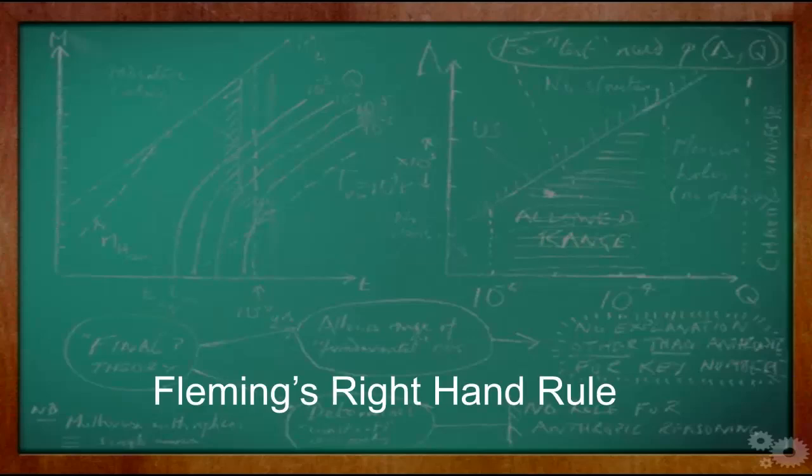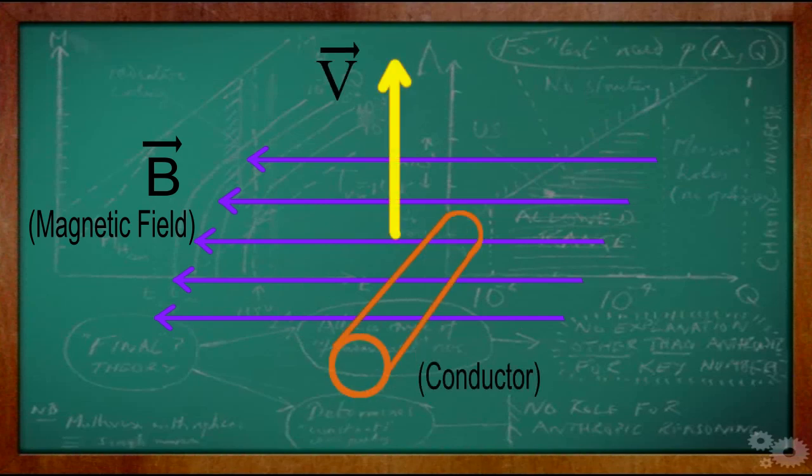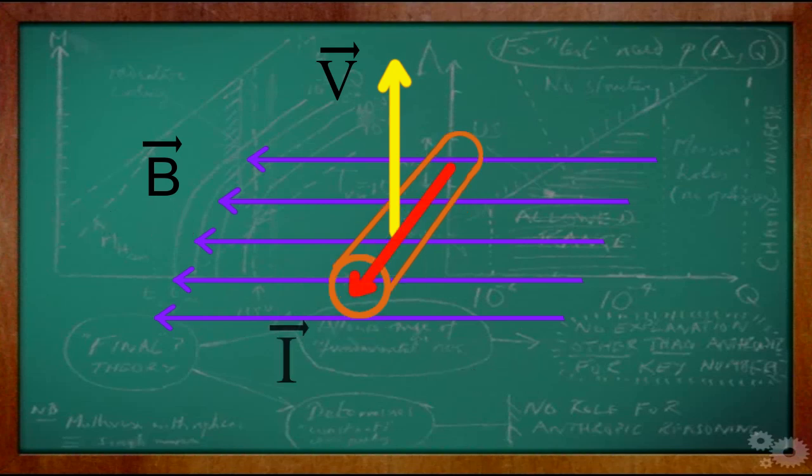Fleming's right-hand rule. When a conductor such as a wire attached to a circuit moves through a magnetic field, an electric current is induced in the wire because of electromagnetic induction. The induced current can have two possible directions in the conductor.